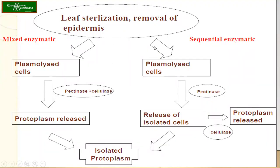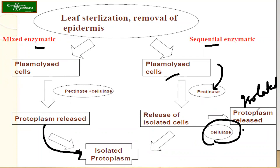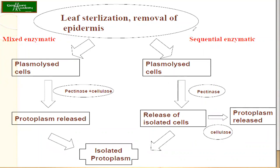In the enzymatic method flowchart, both methods are shown. For the mixed method: plasmolyzed cells have a mixture of pectinase and cellulase added and kept for incubation, during which these enzymes act on the plant cell walls, releasing the protoplasts. For the sequential method: first plasmolysis is done, pectinase is added and kept for some time to get isolated cells. If protoplasts are not released, cellulase is also added. The resulting isolated protoplasts that are intact and in good condition are selected under the microscope for genetic manipulation.